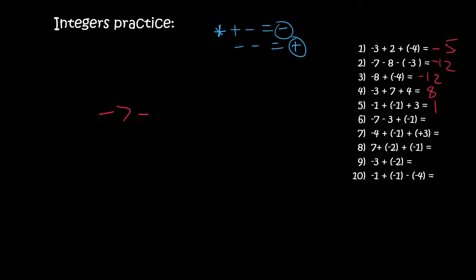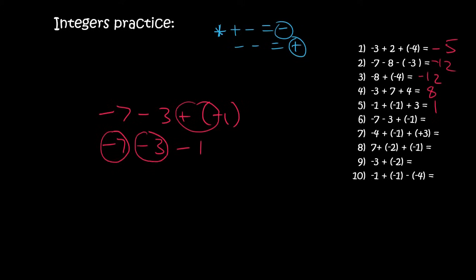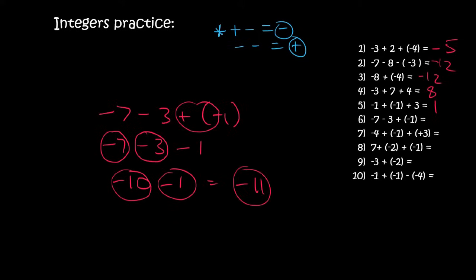Number six. Step one: get rid of all the brackets. A plus and a minus is a minus. You owe people seven rand, then you owe them another three rand — that means you now owe a total of 10 rand. Then you have to minus another one rand, so you owe people even more. You owe 11 rand.